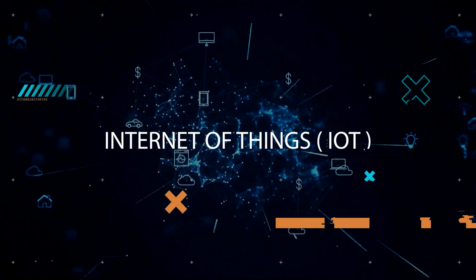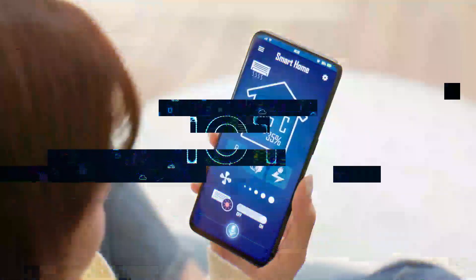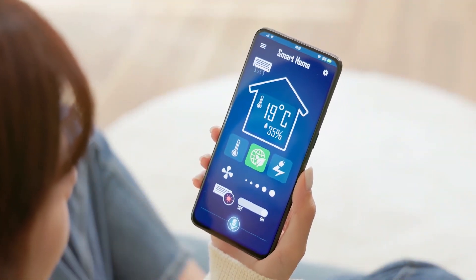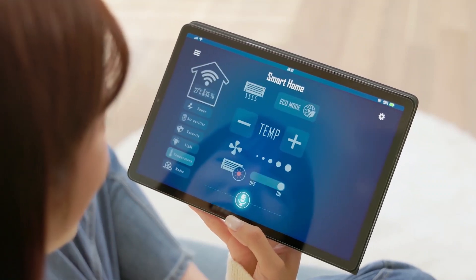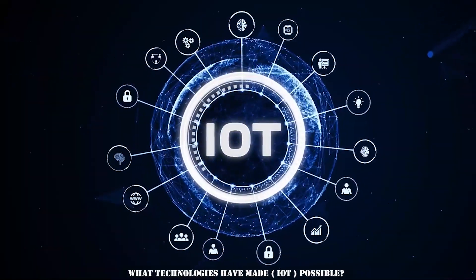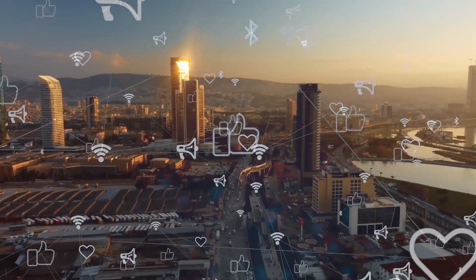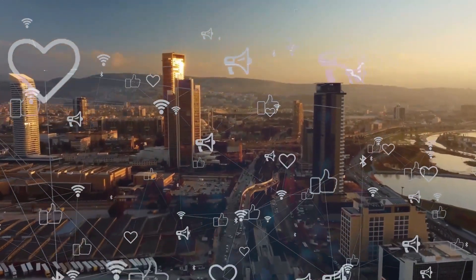Internet of Things. The Internet of Things, also known as IoT, describes physical objects embedded with sensors and actuators that communicate with computing systems via wired or wireless networks, allowing the physical world to be digitally monitored or even controlled. What technologies have made IoT possible? While the idea of IoT has been in existence for a long time, a collection of recent advances in different technologies has made it practical.